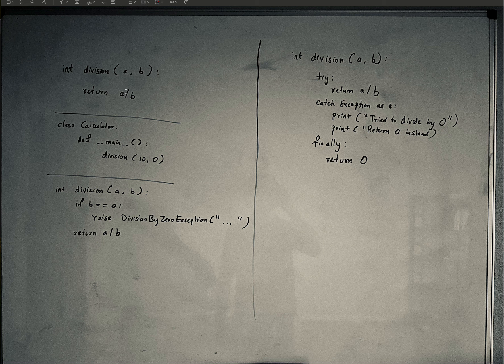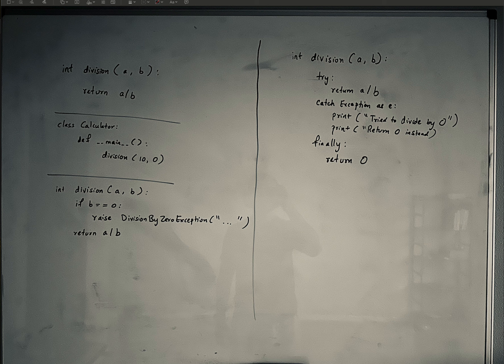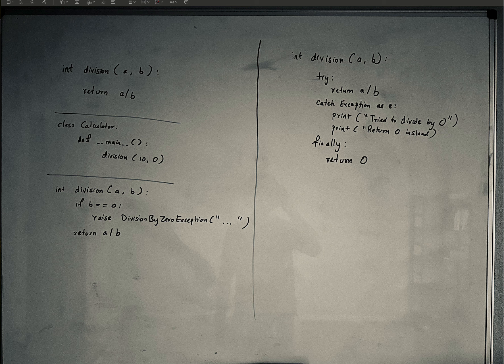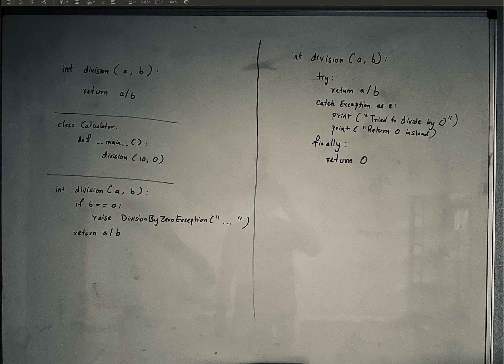It will try to return 10 divided by 0. Now, as you know, 10 divided by 0 will throw a division by 0 exception. The reason why it throws division by 0 exception is because a division by 0 is simply not possible.